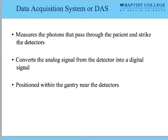The Data Acquisition System, or DAS, is the software part of the system. It measures photons that pass through the patient and strike the detectors, converts that to an analog signal, then converts it to a digital signal. It's located inside the gantry near the detectors so it can rapidly convert the signal with no information lost in transit.